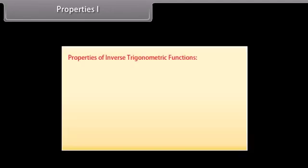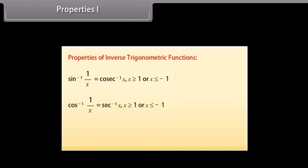Let's now learn about properties of inverse trigonometric functions. sin⁻¹(1/x) = cosec⁻¹ x, where |x| ≥ 1. cos⁻¹(1/x) = sec⁻¹ x, where |x| ≥ 1. tan⁻¹(1/x) = cot⁻¹ x, where x > 0.